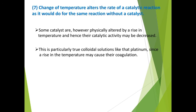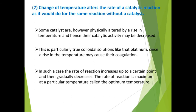In such a case — for example, platinum colloidal solution — as temperature rises, coagulation is observed, and as a result the rate of reaction increases up to a certain point and then gradually decreases. The rate of reaction is maximum at a particular temperature. Up to that temperature, as you keep increasing temperature, rate increases; beyond that point, rate decreases. The temperature at which the rate of reaction is maximum is called the optimum temperature.